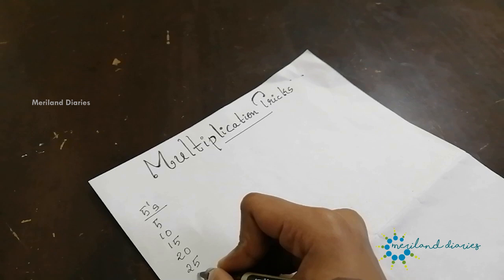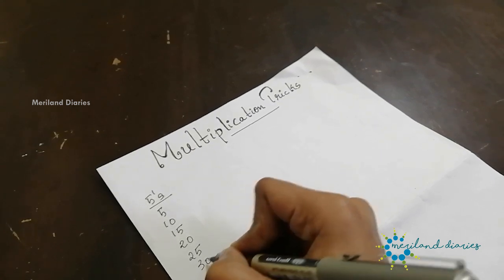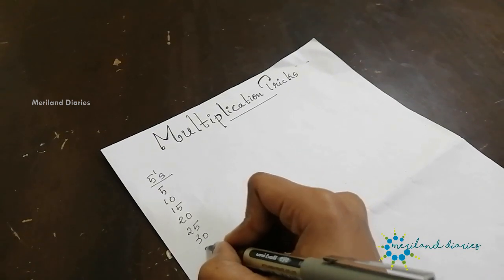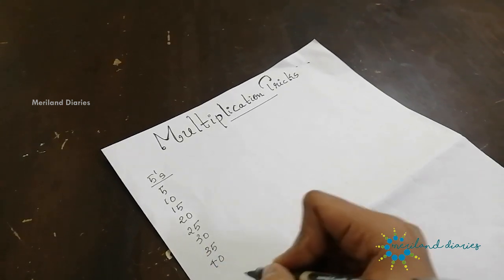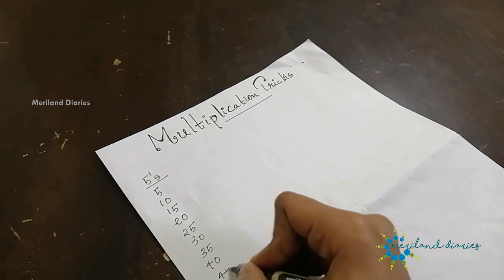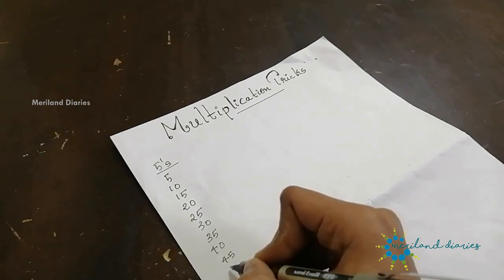5 into 6 is 30, 5 into 7 is 35, 5 into 8 is 40, 5 into 9 is 45, then 5 into 10 is 50.